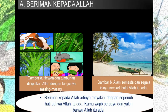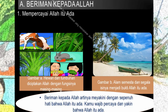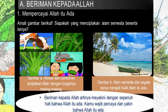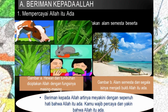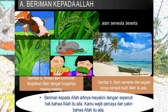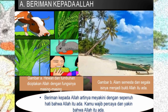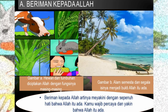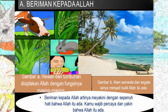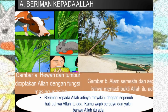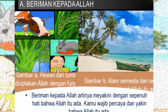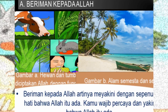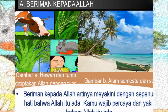Beriman kepada Allah. Mempercayai Allah itu ada. Coba kalian amati gambar berikut — siapakah yang menciptakan alam semesta beserta isinya? Hewan dan tumbuhan diciptakan oleh Allah dengan fungsinya masing-masing. Alam semesta dan segala isinya menjadi bukti Allah itu ada. Beriman kepada Allah artinya meyakini dengan sepenuh hati bahwa Allah itu ada, dan kalian wajib mempercayai dan yakin bahwa Allah itu ada.